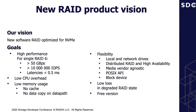So, we designed a new software solution. One of the main requirements was flexibility — it should work with any NVMe devices, local and network, from any vendor. You can create a distributed RAID or a cluster from software RAIDs. It should also support POSIX API and provide a block device. The performance goals are: 50 GB per second for sequential workload and 10 million IOPS for random workload on RAID 6. It should also have a free version.